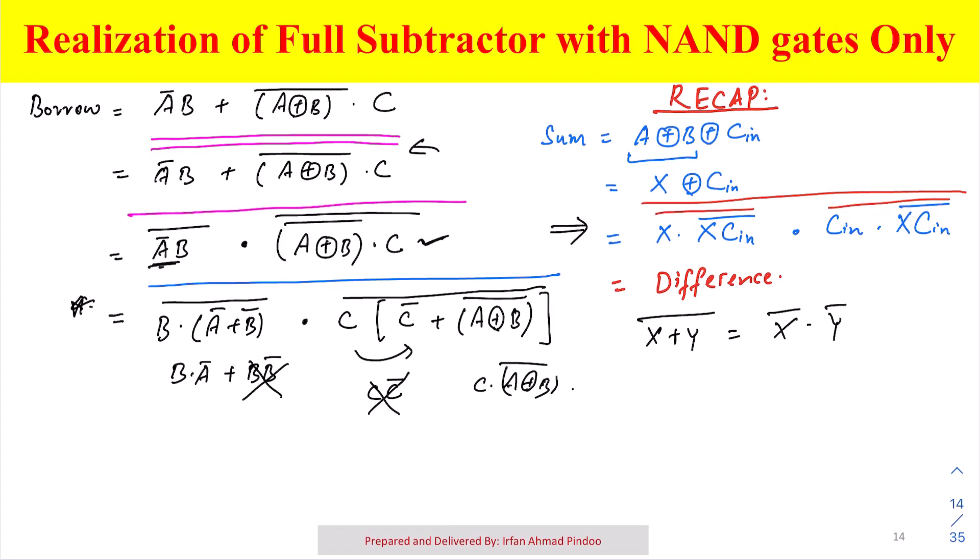The point is we are changing our equation in a form which is actually same as what is available in our previous step, and we are simply adding the extra term so that it will correlate to our NAND realization.